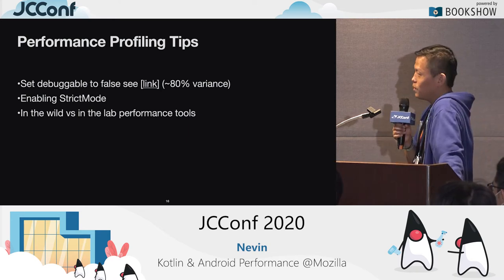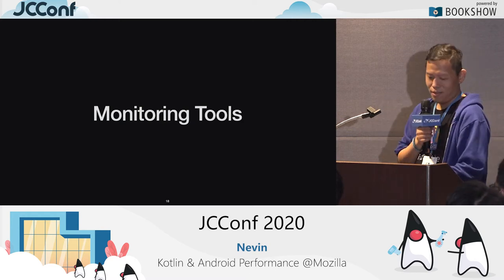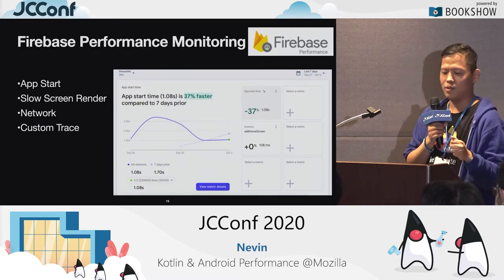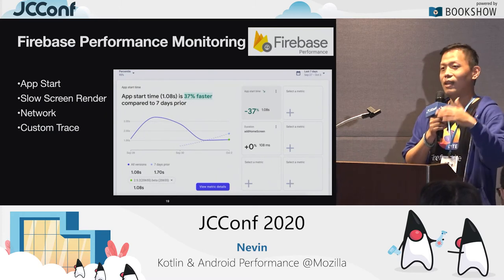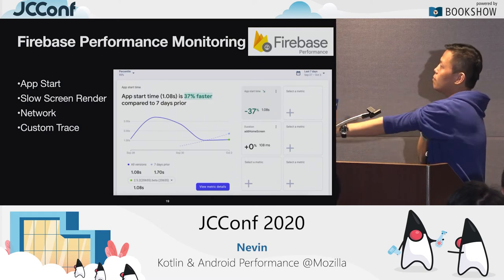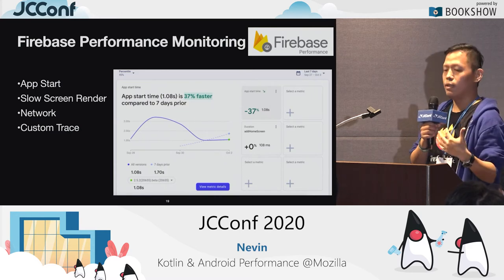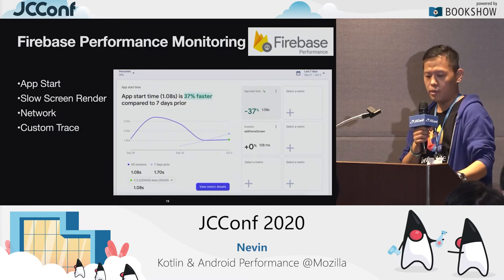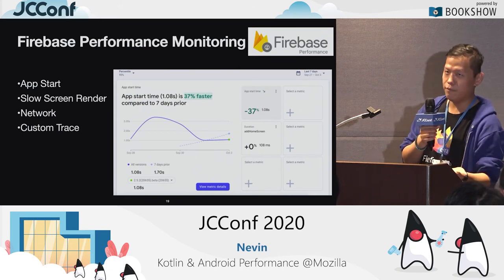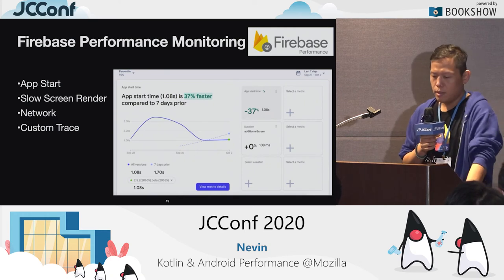Now I'll talk about in-the-wild and in-the-lab performance tools. Monitoring tools are what I call in-the-wild. When the app is shipped, there's no way to get profiling results from users' phones directly. Firebase Performance Monitoring is a library — if you add it, it will add about 600 kilobytes to your APK size, but you don't need to add any lines of code except the Gradle task. You don't have to add anything in your production code, and then you get app start, slow screen render, and network performance metrics for free.